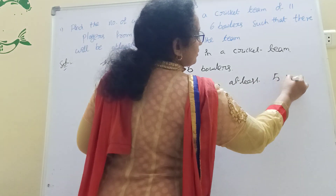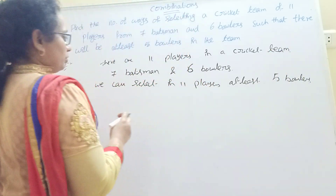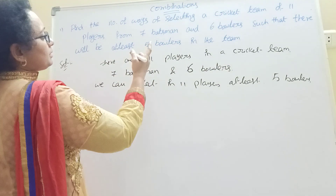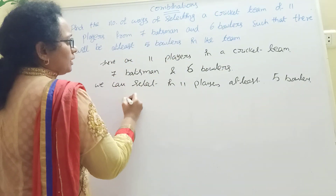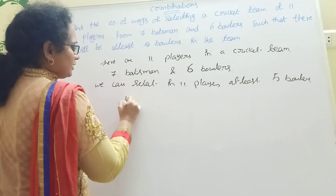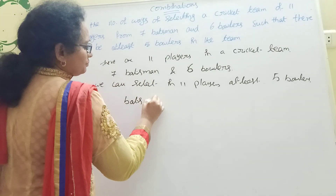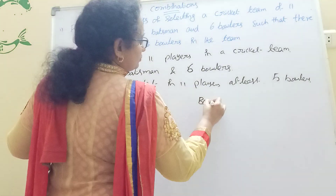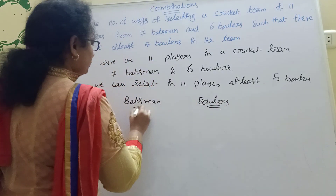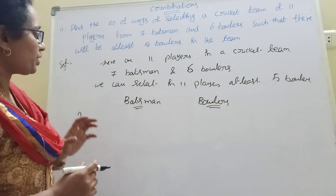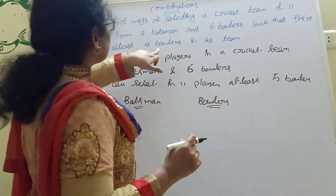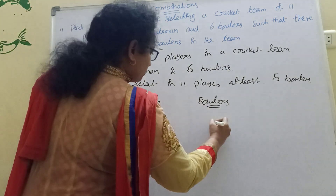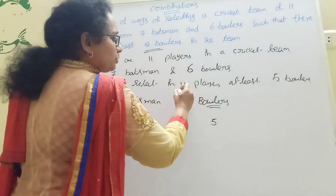At least 5 bowlers means we start from 5 bowlers. First we place the bowlers, then the batsmen. If we fix 5 bowlers first, the remaining spots are 11 minus 5 equals 6, so we need 6 batsmen. How many batsmen are there? 7. How many bowlers are there? 6.